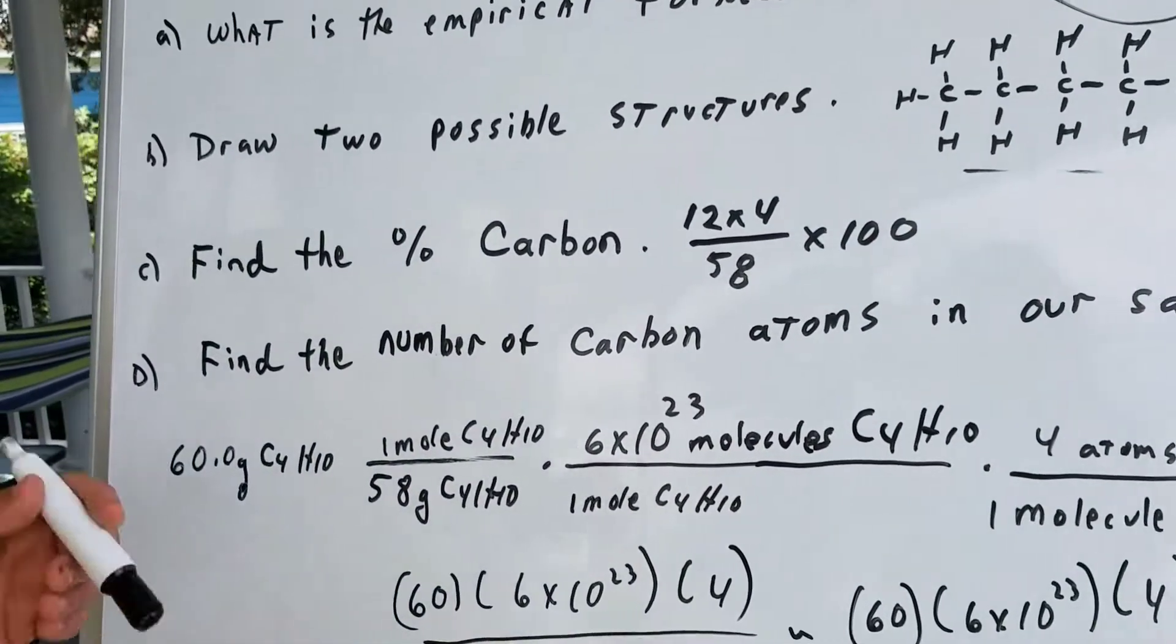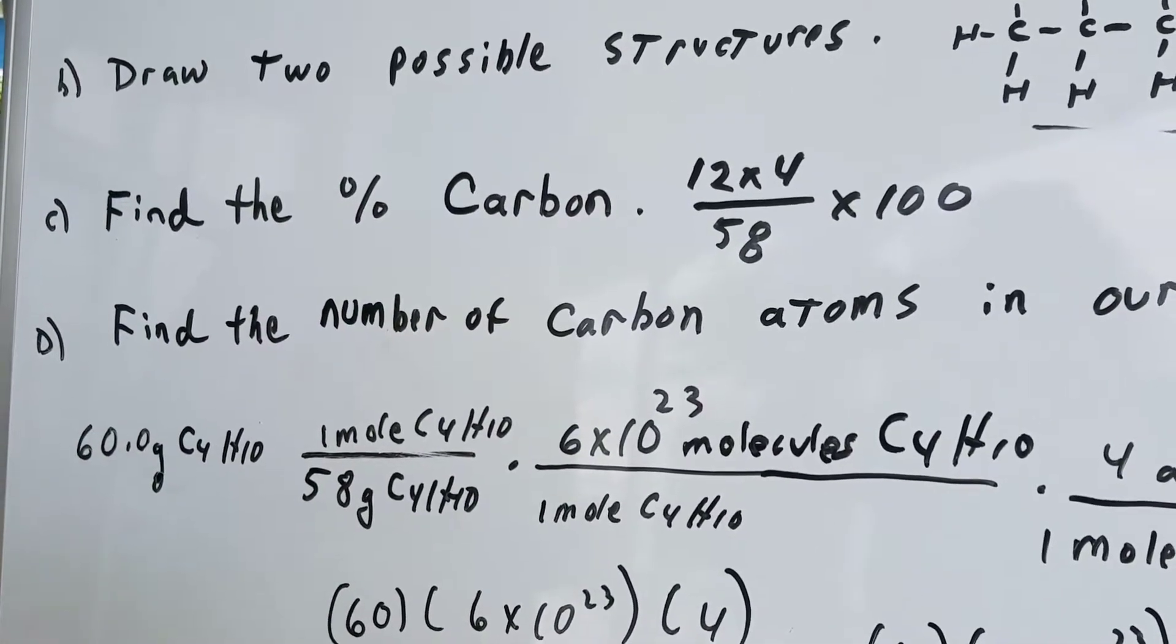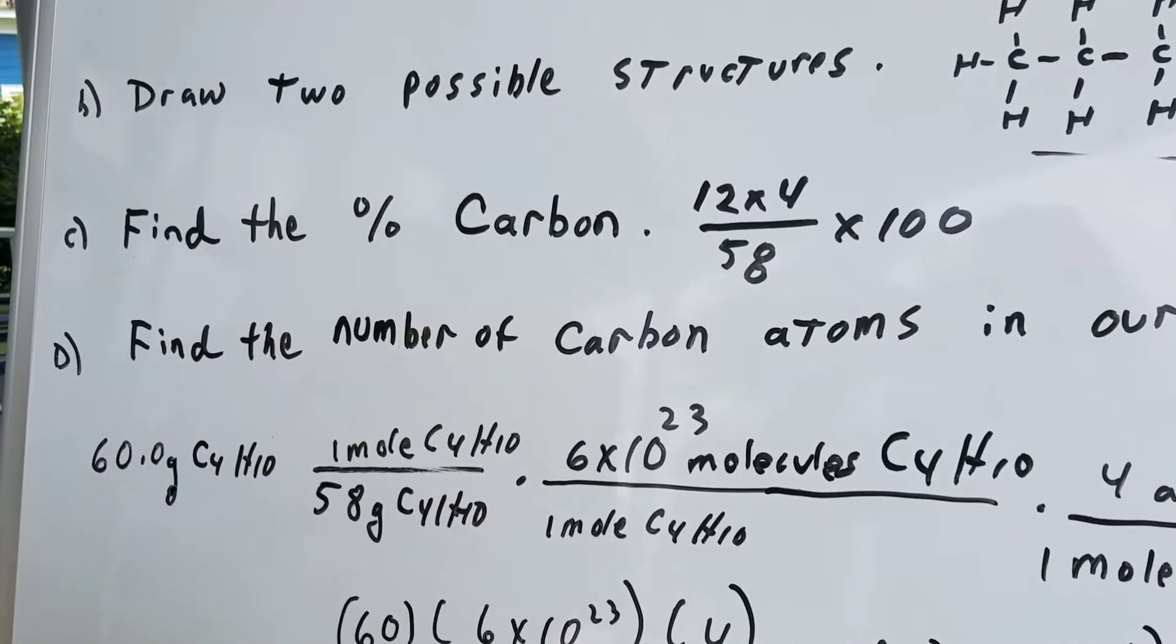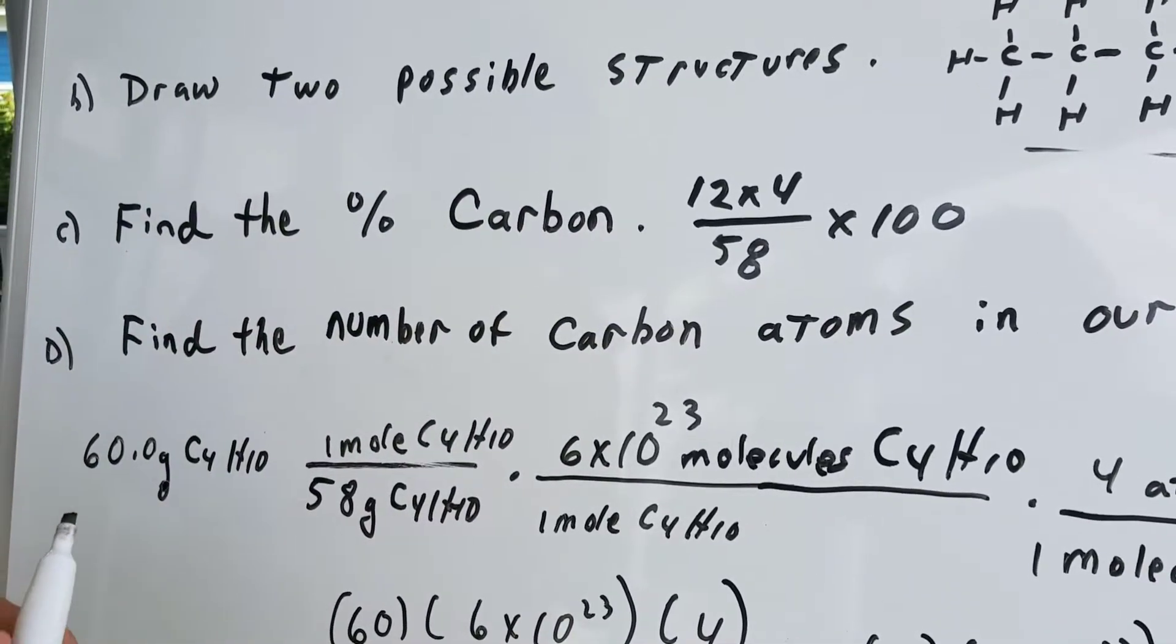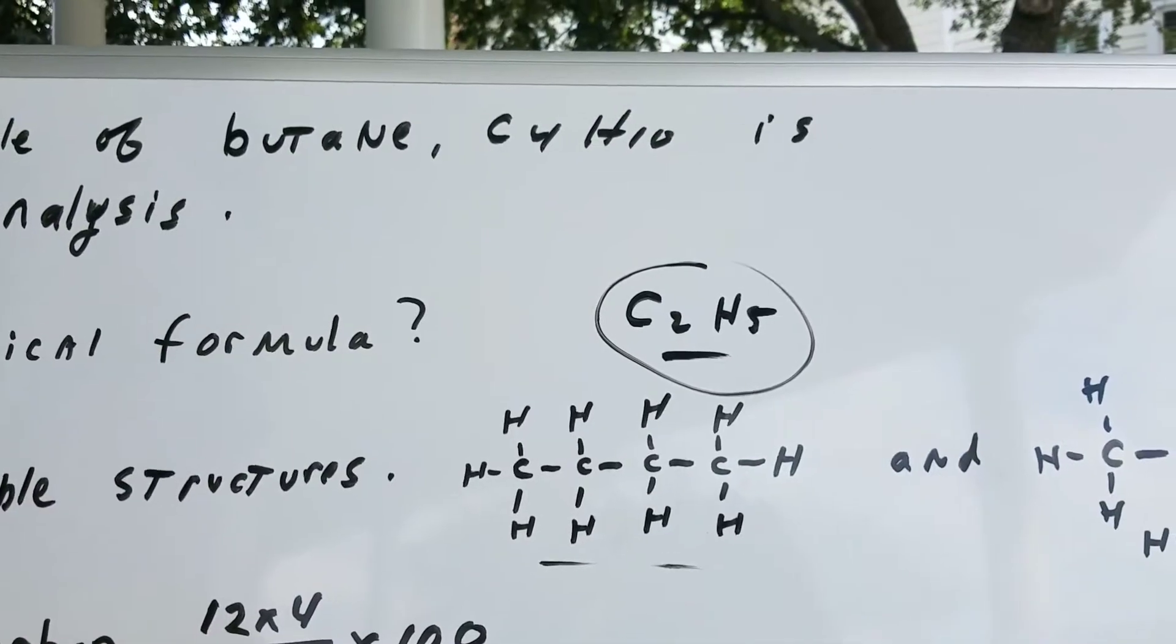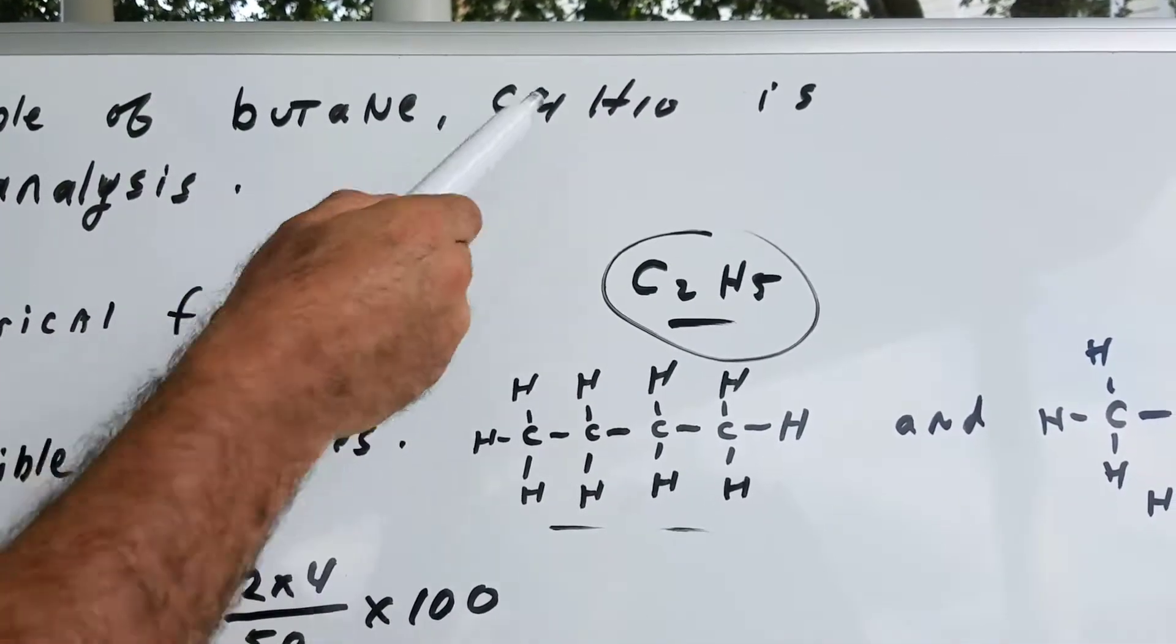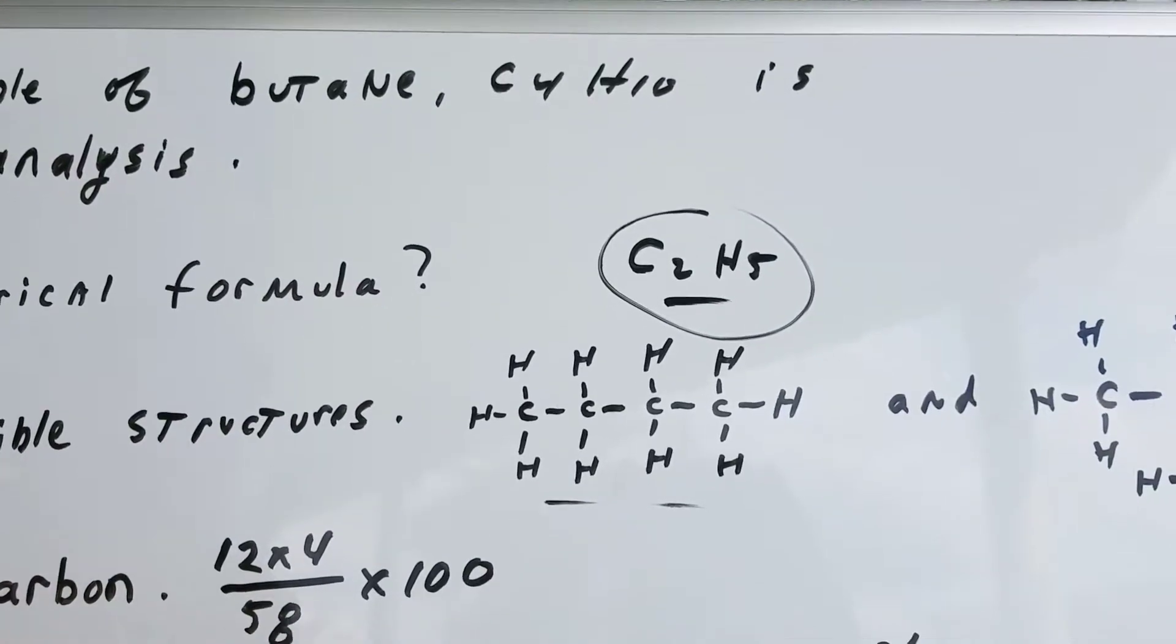Part C of this is a sure bet on your exam to find the percent of a particular atom. A sure bet. As you can see, find the percent of carbon. The total weight of this is 58. I got 58 by adding 12 times 4, plus 10.